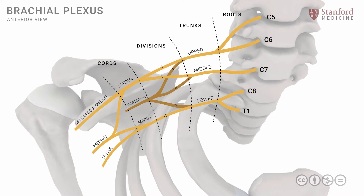These three nerves — the musculocutaneous, median, and ulnar — essentially all come from anterior divisions. It's an important concept to keep in mind that branches coming from the anterior divisions will primarily supply muscles on the anterior side of the upper limb.